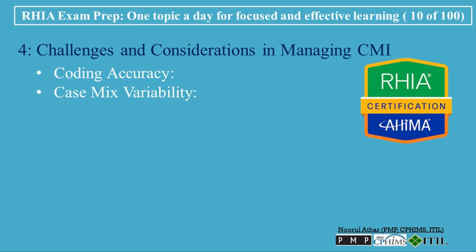Case Mix Variability: CMI can fluctuate based on the types of patients admitted during a specific period. For instance, if a hospital experiences a sudden influx of less complex cases, the CMI may temporarily decrease. It's important to consider these fluctuations when analyzing CMI trends. Documentation: Thorough and accurate documentation by healthcare providers is vital for supporting the coding process and ensuring that the correct DRG is assigned. Incomplete documentation can lead to undercoding, which might result in a lower CMI and reduced reimbursement.